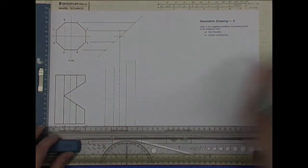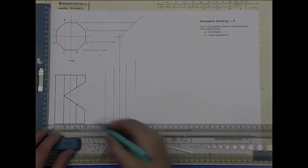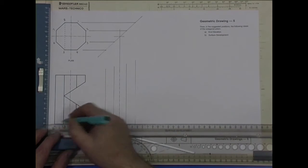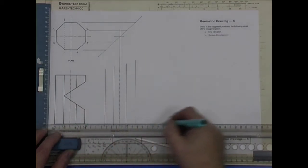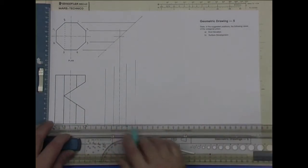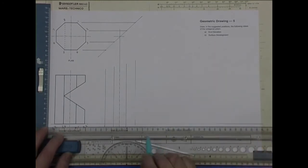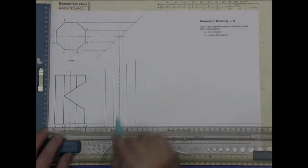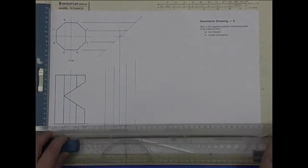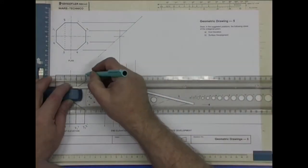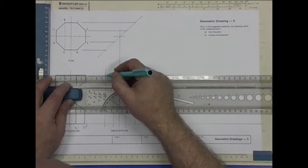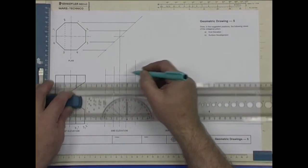I need to extend my x-y line. I'm extending that along there because I know I need a surface development later. So all I need now is my total height. And that's the uncut octagonal prism drawn.